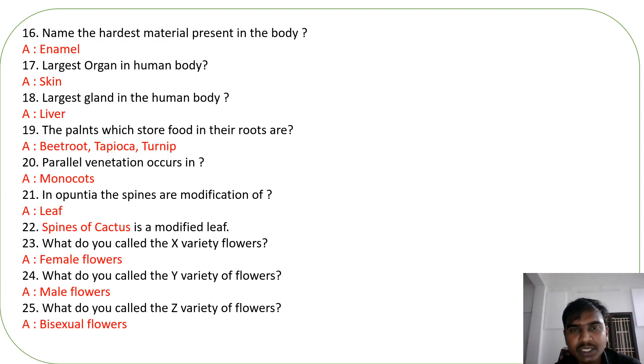Name the hardest material present in the body. Enamel. Largest organ in the human body. Skin. Skin is the largest organ in the human body.